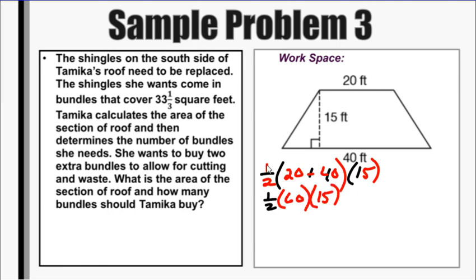So half times sixty times fifteen. Half of sixty is thirty. Thirty times fifteen is 450 square feet. So that is the area of the roof. So that's the first part.